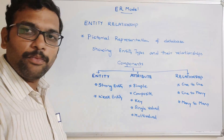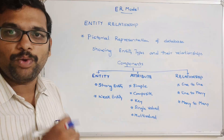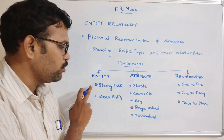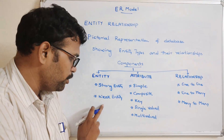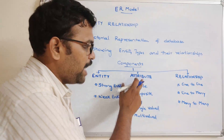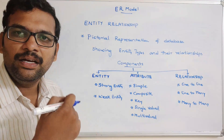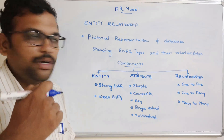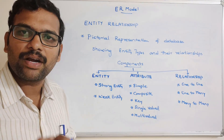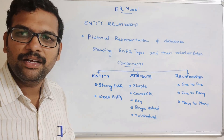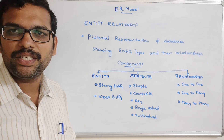I will stop here. In the next session we'll see the notations — how to represent a strong entity using a diagram, how to represent a weak entity using a diagram, how to represent the attributes of entities, and how to represent the relationships. If you have any doubts, feel free to post them in the comment section. If you enjoyed the session, like, share, and don't forget to subscribe. Thanks for watching!